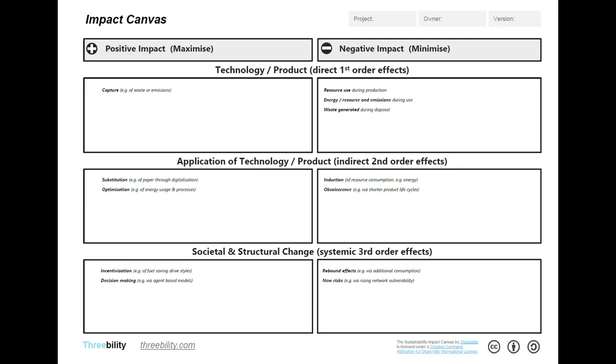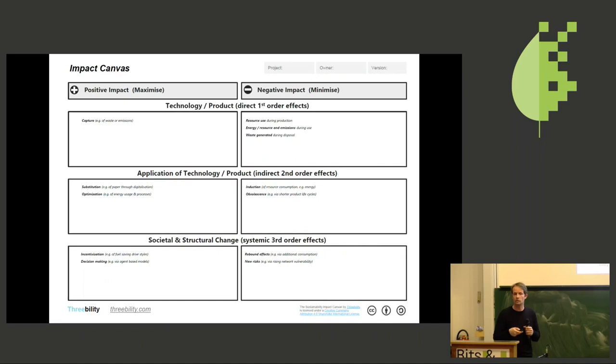The second level is the application of the technology. For example, you want to optimize the energy usage. At the same time, you want to minimize the induction of additional resource consumption. People in the area called it the Jevons paradox when sometimes you generate a product that standalone uses less energy than the product it replaces, but because many more products of the same type are being produced, the total energy consumption is much higher.